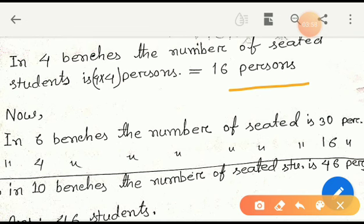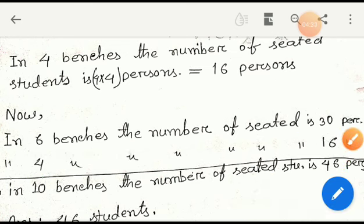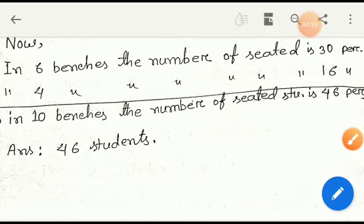Now, in six benches the number of seated is thirty persons, and in four benches the number of seated students is sixteen. We have to do addition. Six and zero is six, four and one is five, three and one is four: forty-six total students. How many seated in ten benches? Forty-six students. Okay, dear students.